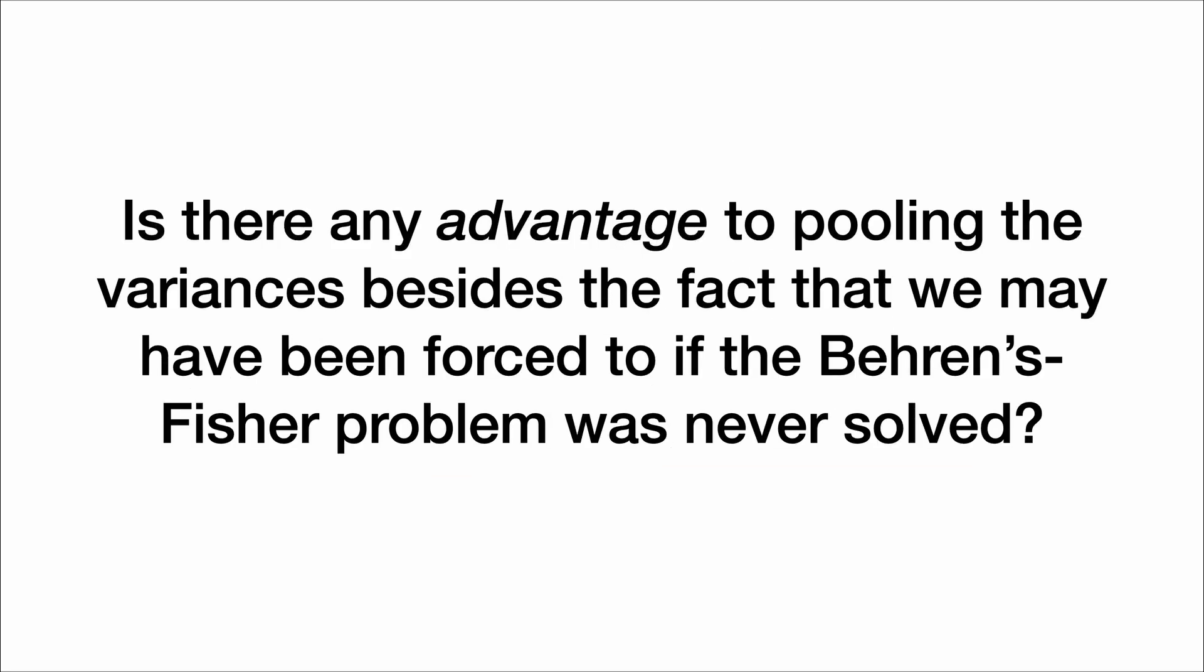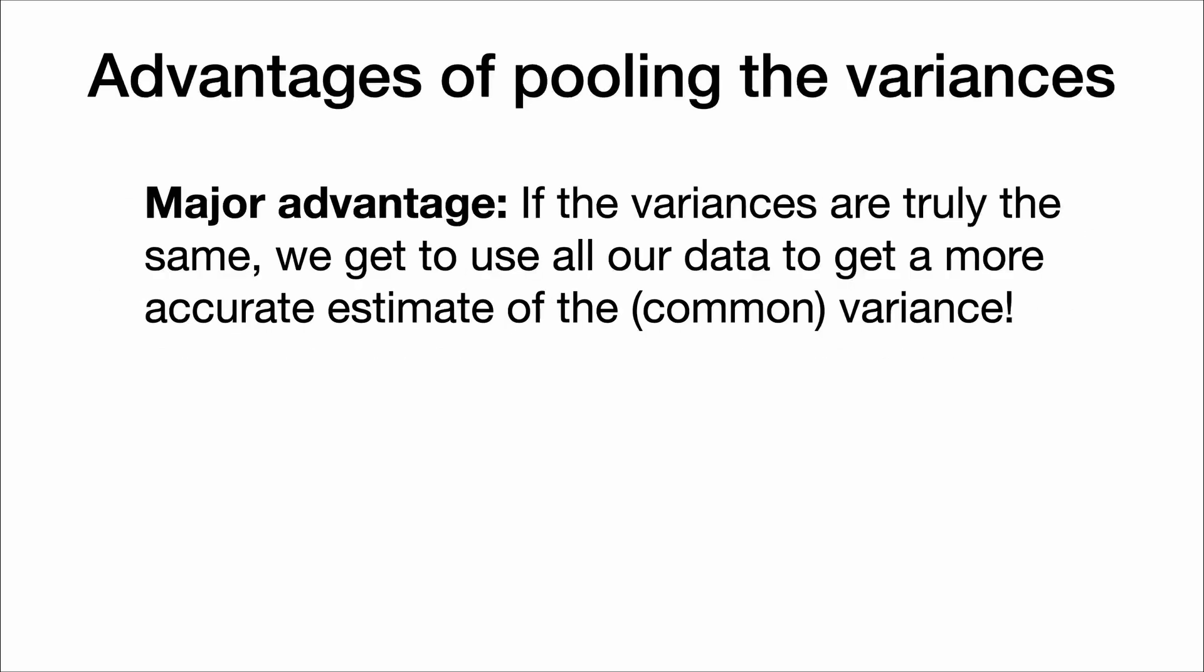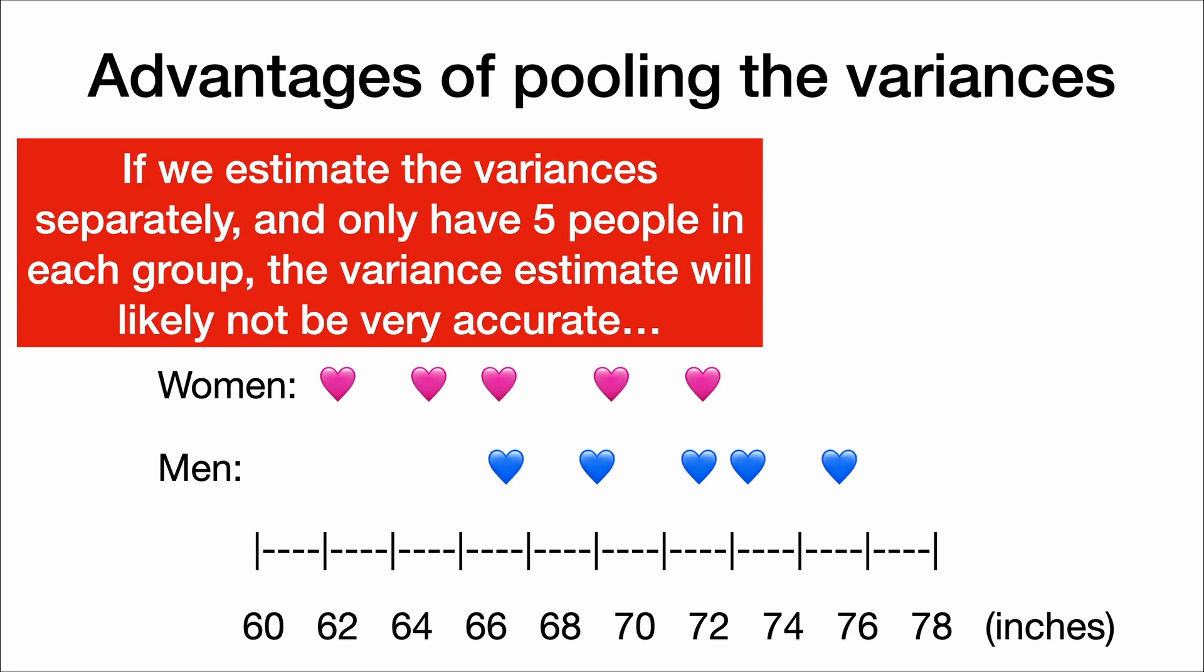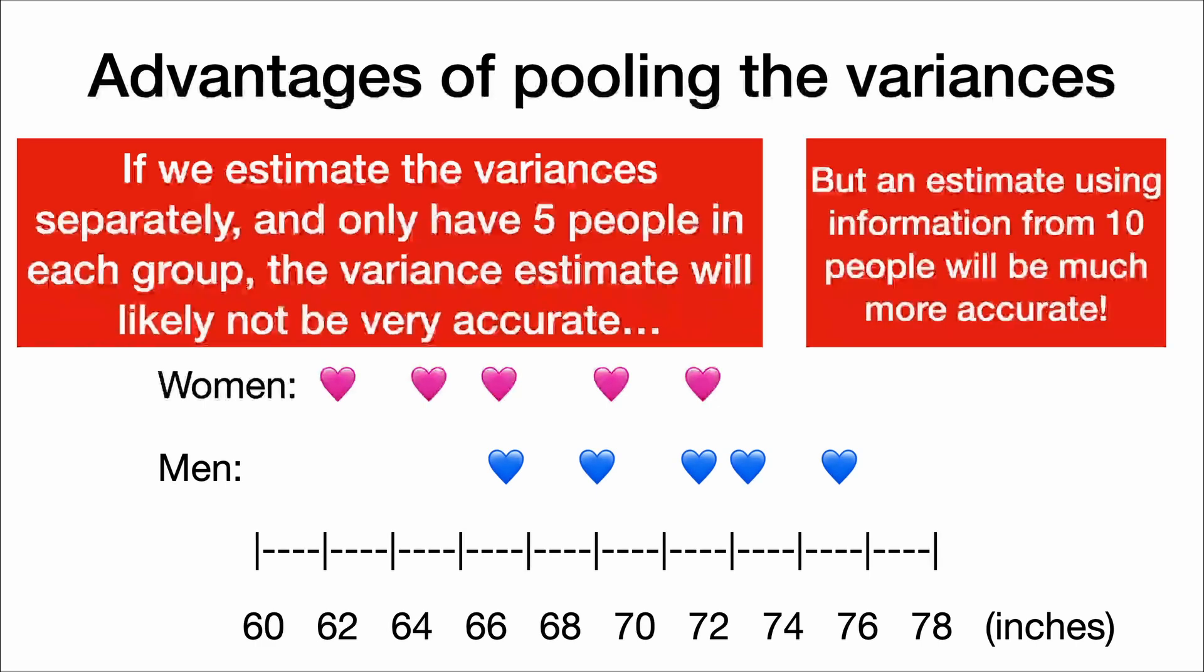Is there any advantage to pooling the variance this way, besides the fact that we may have been forced to if the Behrens-Fisher problem was never solved? Well, the major advantage of pooling the variances is that if the variances are truly the same, we get to use all of our data to get a more accurate estimate of the common variance. For example, look at this dot plot here of men and women's heights. If we estimate the variances separately and we only have five people in each group, the variance estimate will likely not really be that accurate. But an estimate using the information from all 10 people will be much more accurate because we're using more data.